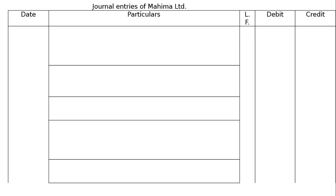Hence, journal entries of Mahima Ltd. We have 5 columns: date, particulars, ledger folio, and debit and credit columns. The year will be 2015 and we will have rupee symbols in the debit and credit columns.